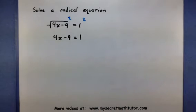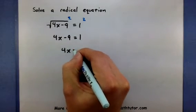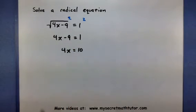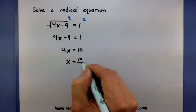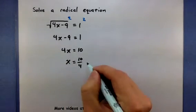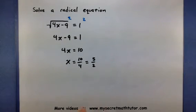Now this is a much nicer equation that I can go ahead and solve. I'll continue by adding 9 to both sides, and then dividing by 4. So this will give me a solution of 5 halves.